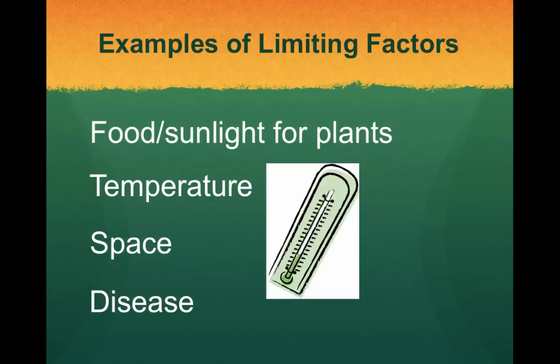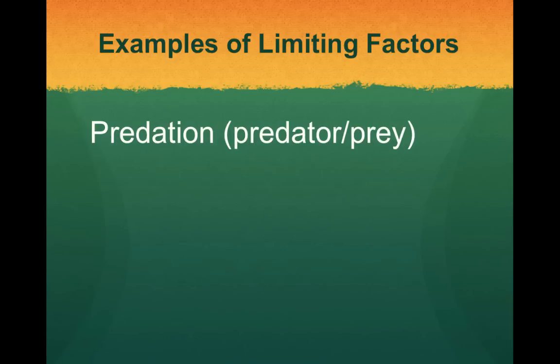Disease is another limiting factor. If we're talking about disease, that could be something like the big deer disease that came around a couple of years ago, affecting a lot of hunters. Disease can spread throughout a population, causing it to decrease quite a bit. Predation — which just refers to predator-prey relationships — asks whether there are too many predators for the amount of prey. For example, if there are too many humans hunting deer, that predator-prey dynamic causes the prey population to go down.